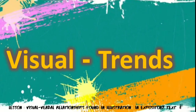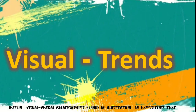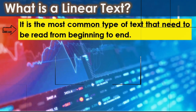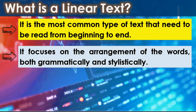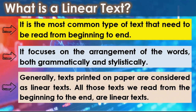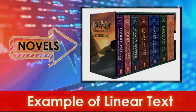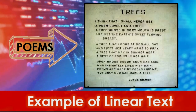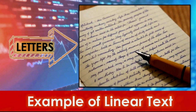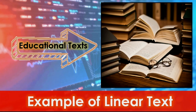Before we understand those visual trends, let us first define what a linear text is. It is the most common type of text that needs to be read from beginning to end. It focuses on the arrangement of words both grammatically and stylistically. Generally, texts printed on paper are considered linear texts. Examples of linear texts include novels, poems, short stories, letters, and educational texts.